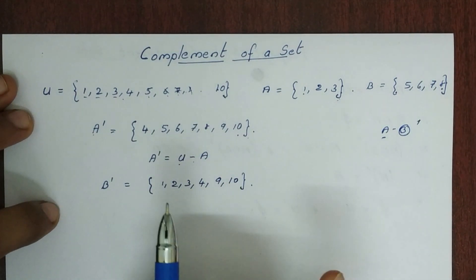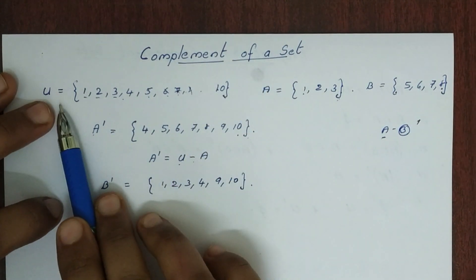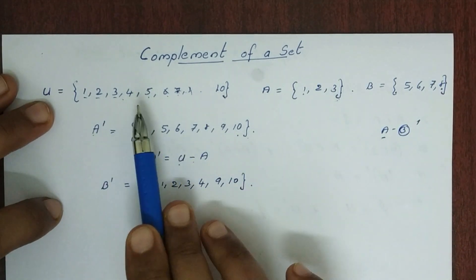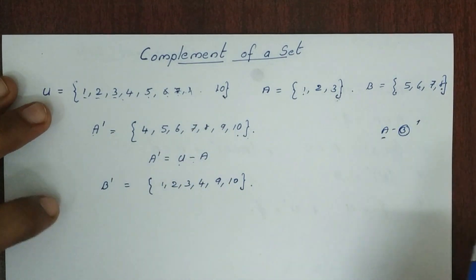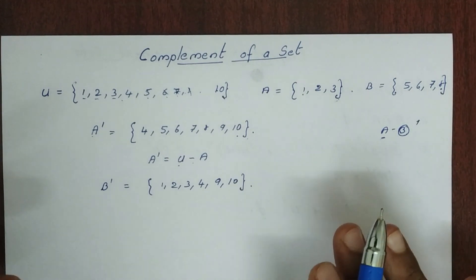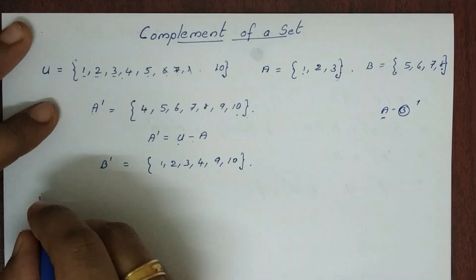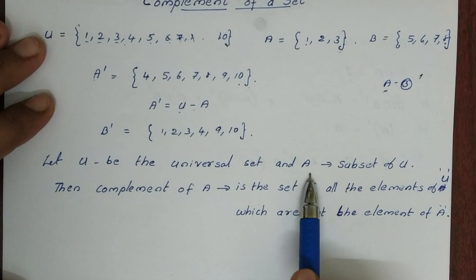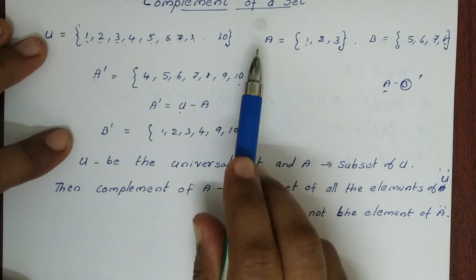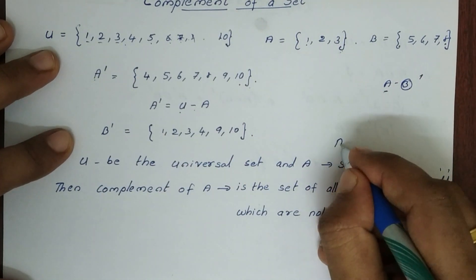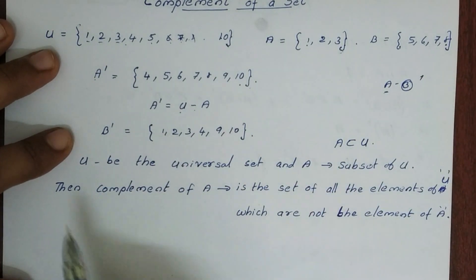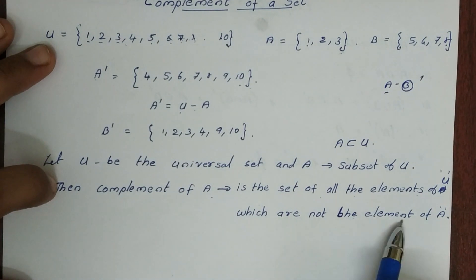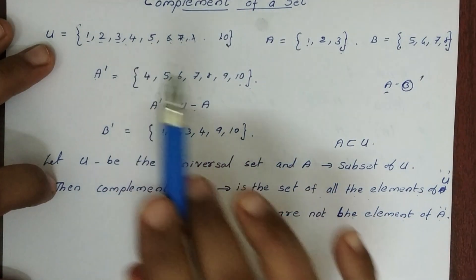If we have the complement of a set, then we have the universal set. The complement is the set of all the elements of U which are not the elements of A.